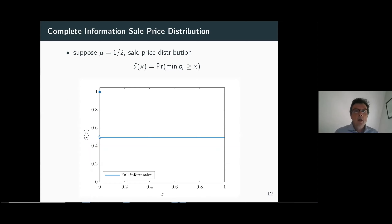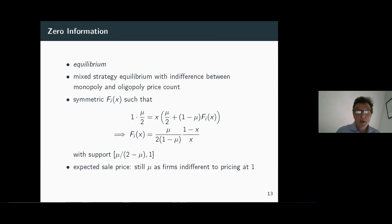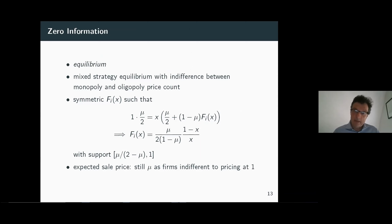Under complete information, the expected price is simply the probability of monopoly mu, so revenue grows linearly in the probability of there being a single price count. For the visualization, the upper cumulative distribution starts at one — the probability the sales price equals or exceeds zero is one — then drops precipitously, since if there's no competition the price will be one, and it stays there. Under zero information — equally likely monopoly or oligopoly — there's a mixed strategy equilibrium.